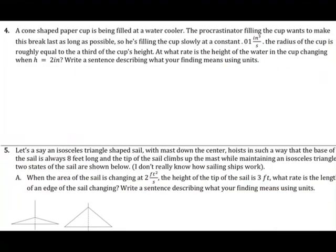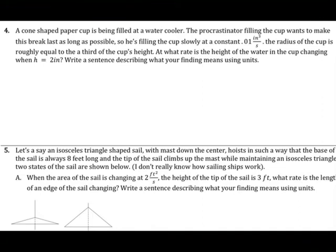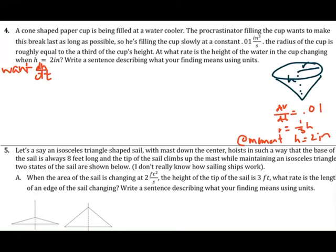Problem 4: a cone-shaped paper cup is being filled at a water cooler at a constant 0.01 cubic inches per second. The radius of the cup is roughly equal to one-third of the cup's height. At what rate is the height of the water changing when h equals 2 inches? We know dV/dt equals 0.01, r equals h/3, and at this moment h equals 2. We want dh/dt. The relevant formula is the volume of a cone.